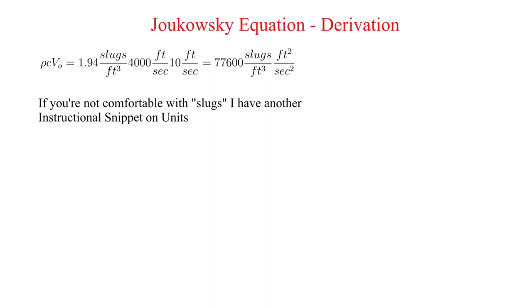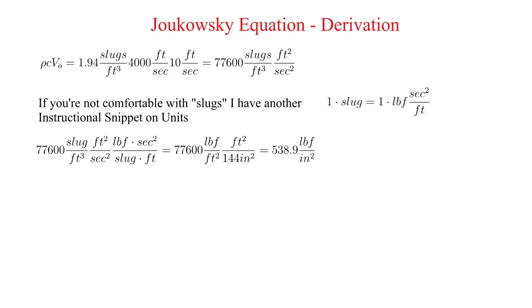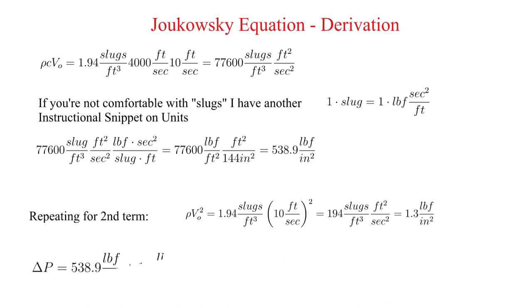Let's clean this up a bit. One slug is equal to one pounds force second squared per foot. We will be using this in the conversions below. For the first term we get 538.9 psi. Repeating for the second term we get 1.3 psi. As you can see the second term is several orders of magnitude smaller than the first. Due to this it is customary to just ignore the second term.